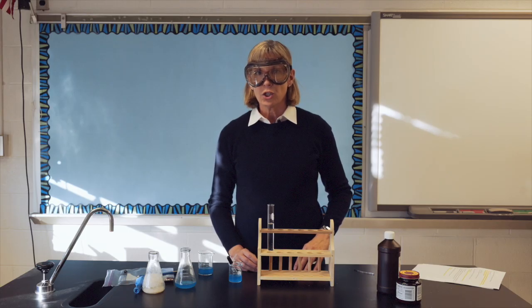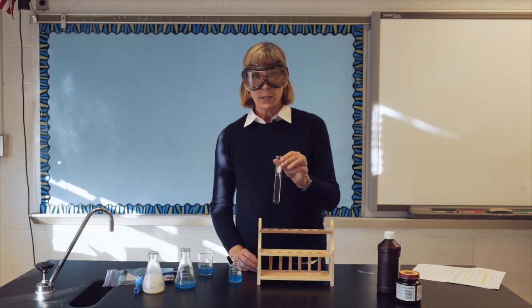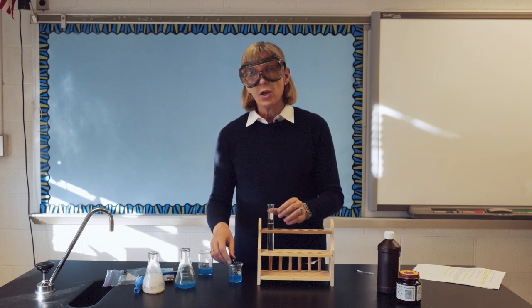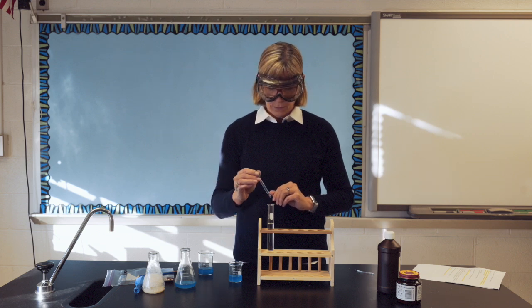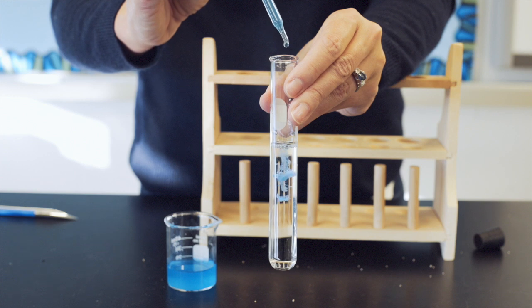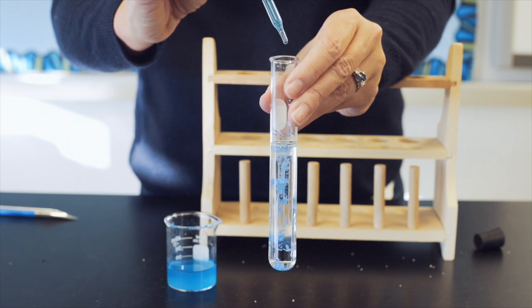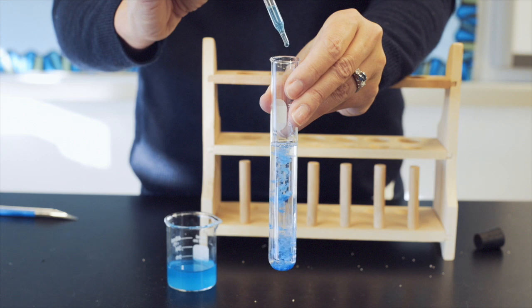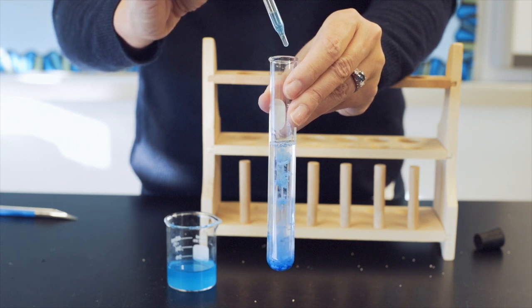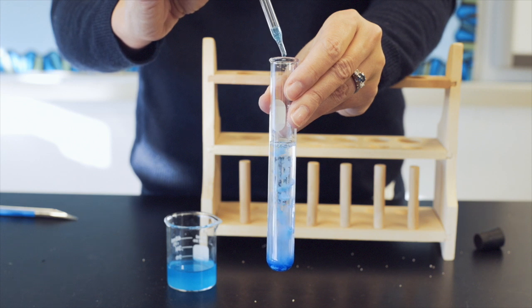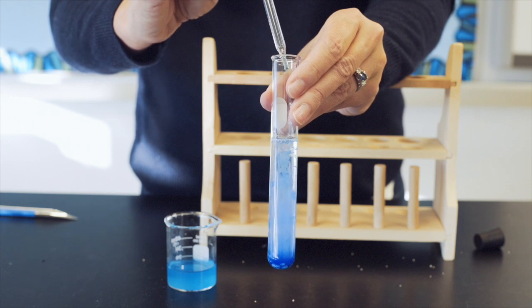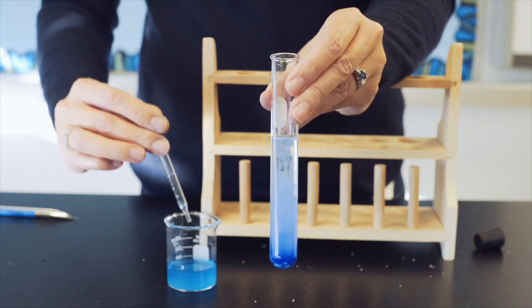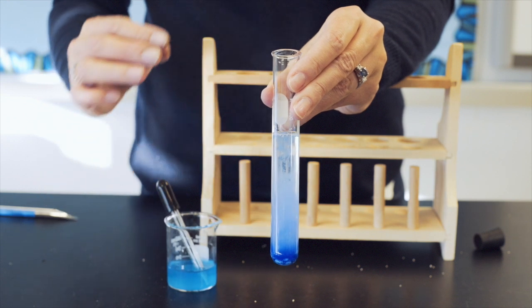Activity D directs you to pour ammonia into a test tube and then add drops of copper sulfate slowly into the test tube. Notice that not only the ammonia changes color, but the copper sulfate does as well. When the two liquids mix together, they form a solid that sinks to the bottom of the test tube.